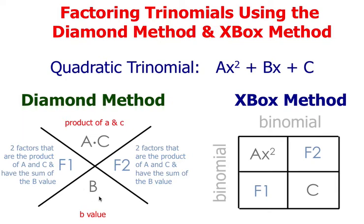After you set up your diamond method you're going to transition to your xbox method. Create a 2x2 box. In the upper left corner you're going to write down the ax² term. In the lower right corner you're going to write down the c term. And in your lower left and the upper right you're going to write down the two factors that you found.